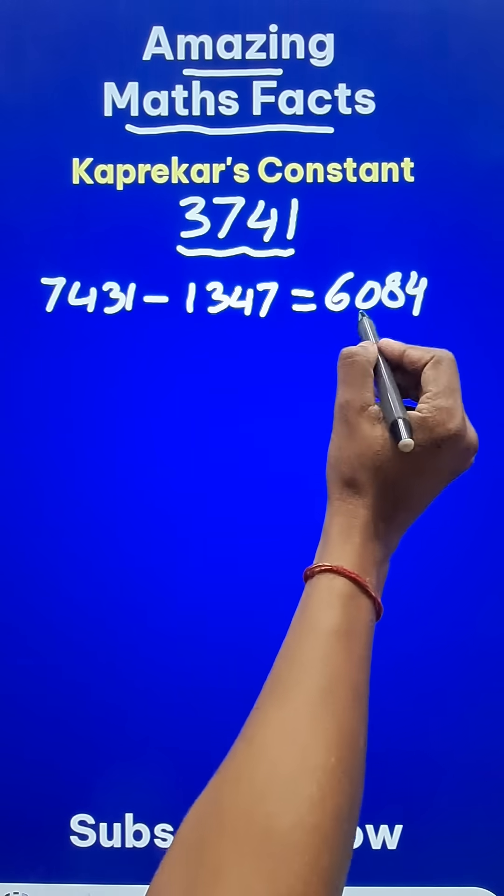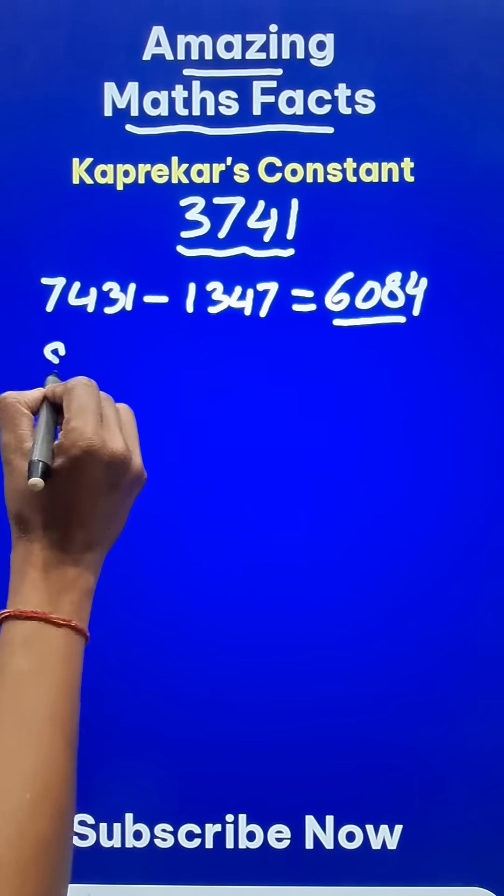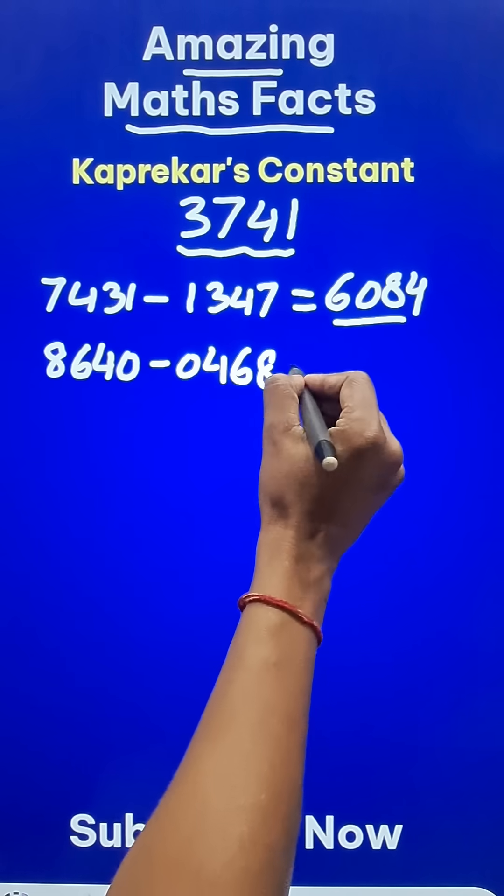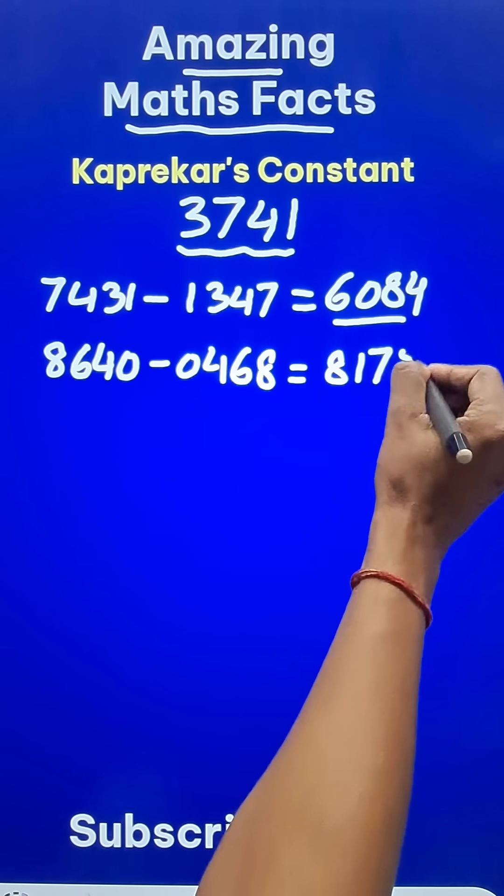Now you have to repeat the same operation on this number. So the highest number is 8640, and 0468 is the lowest number, and therefore you get 8172.